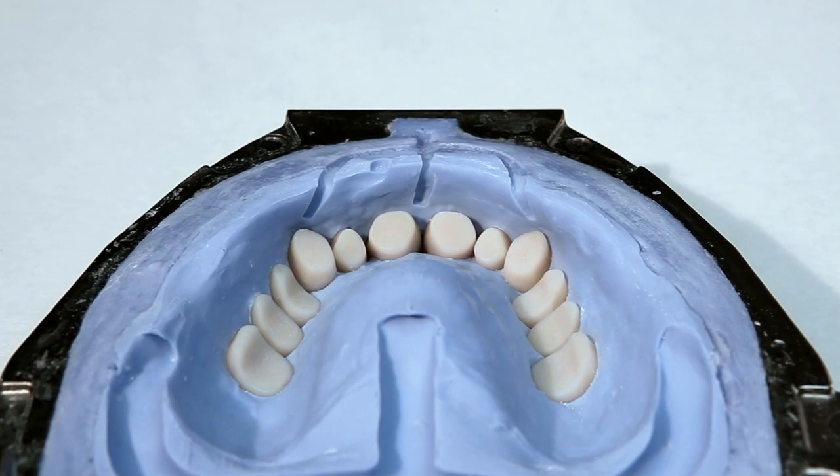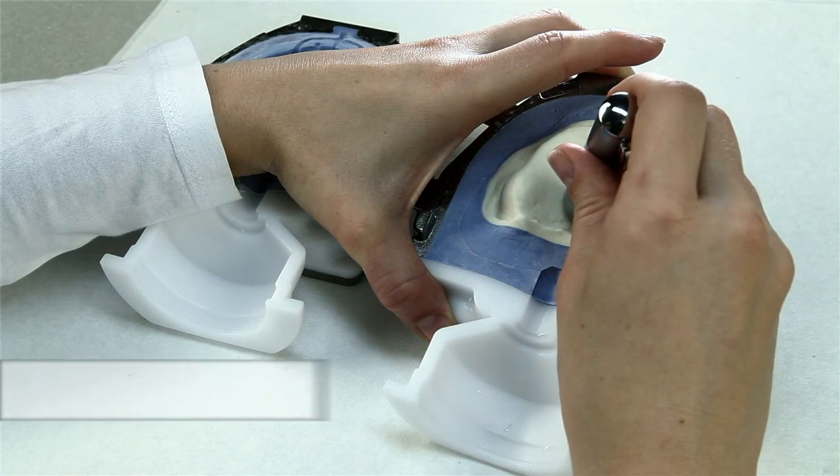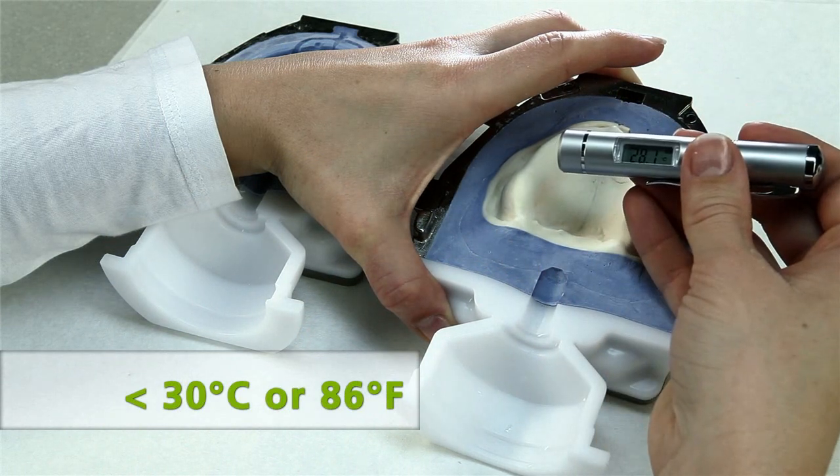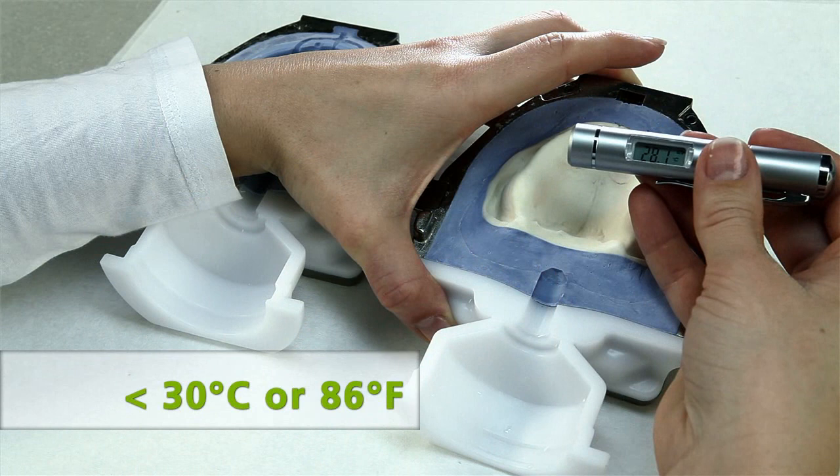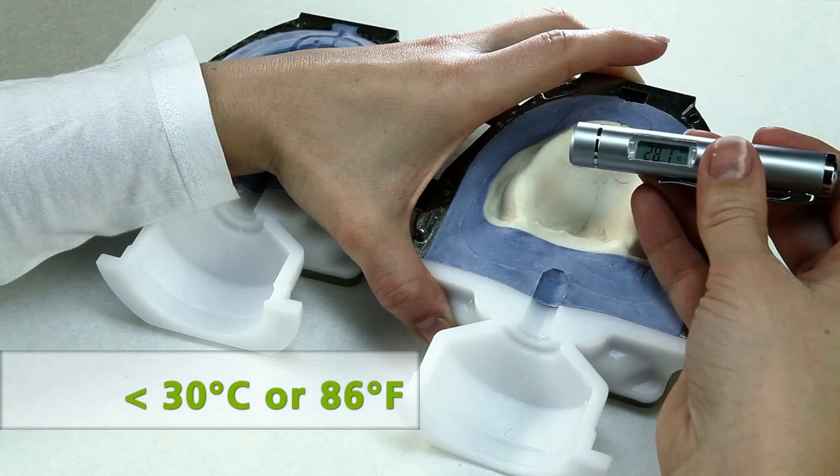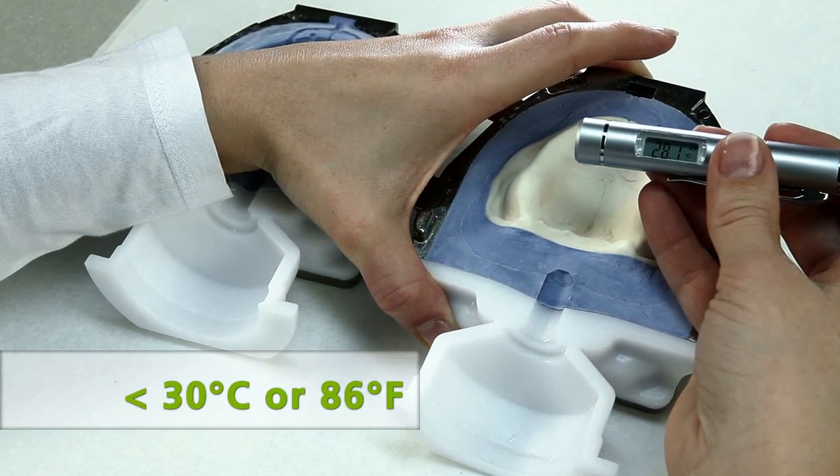Before isolation, cool the flask halves to below 30 degrees Celsius or 86 degrees Fahrenheit using air or clean cold water. Use the infrared thermometer supplied to check the temperature.